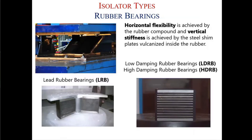You might ask how the isolator returns back — it can displace maybe 50 centimeters in 360 degrees in both directions. The answer is that rubber is elastic. When you pull rubber, it displaces and elongates; when you release it, it comes back to the original position. It's the same with the isolator: when the building displaces, the rubber itself pulls the building back to the original position.